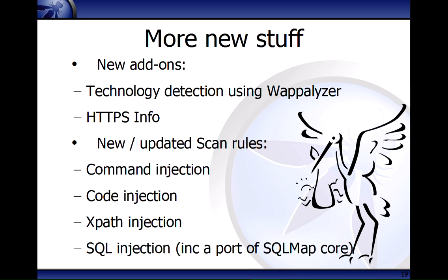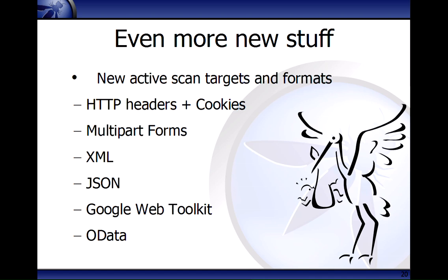There are loads of other people working on things within ZAP beyond Google Summer of Code. We've got an HTTPS info plugin add-on so you can analyze certificates and check for BEAST and CRIME vulnerabilities. We've got new or updated scan rules including command injection, code injection, XPath injection, and new SQL injection rules that actually use a port of the SQLMap core — very powerful. And we now support new targets: you can attack headers, cookies, multi-part forms, and we now understand XML, JSON, GWT, and OData — more support than a lot of commercial tools have.